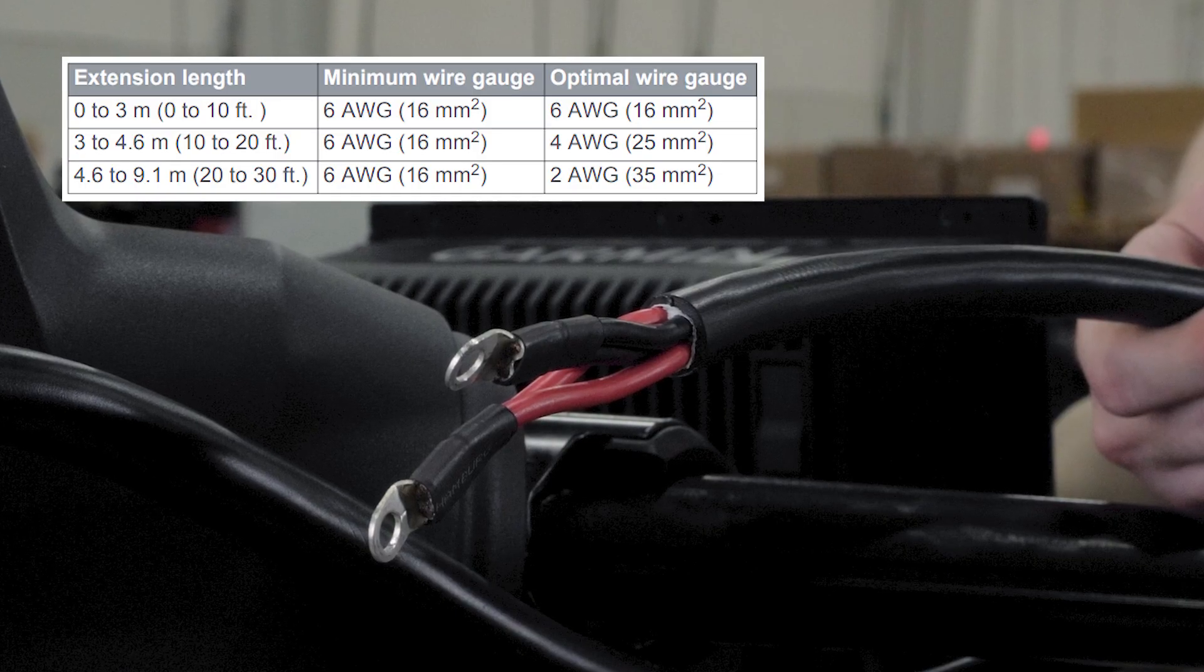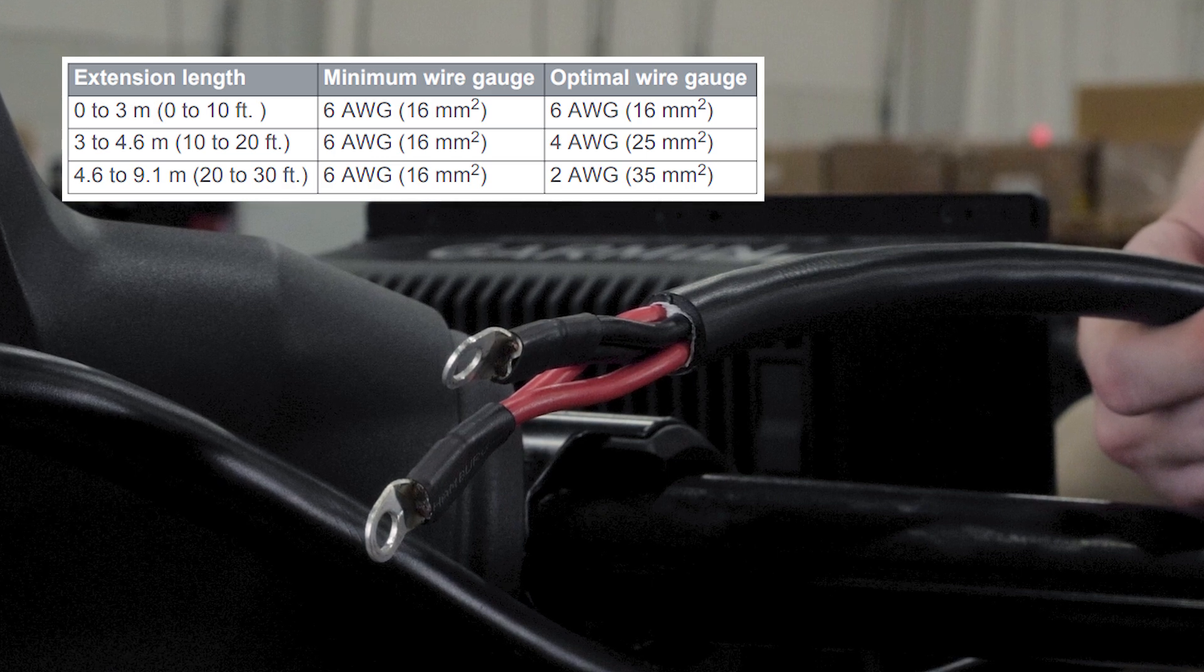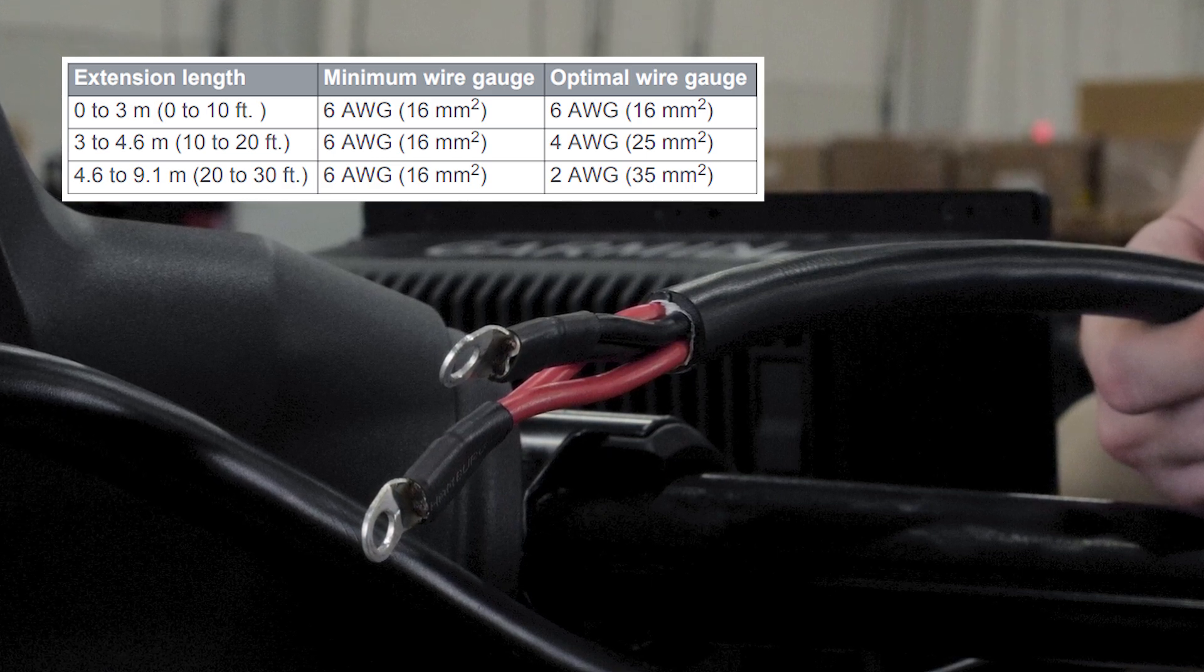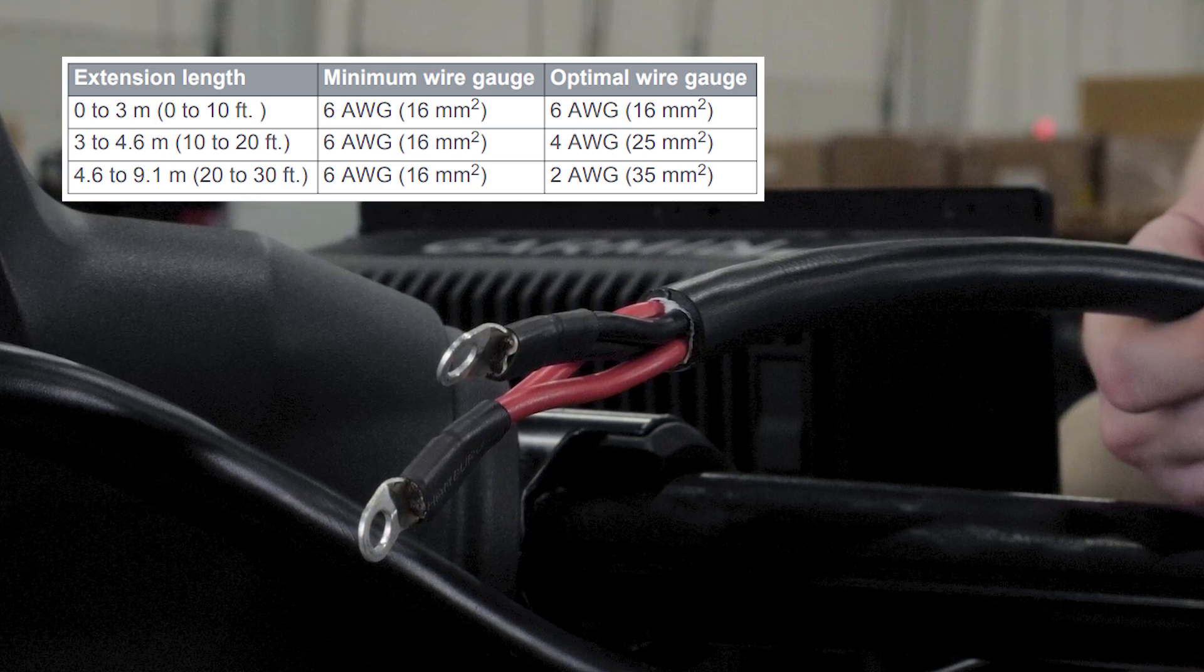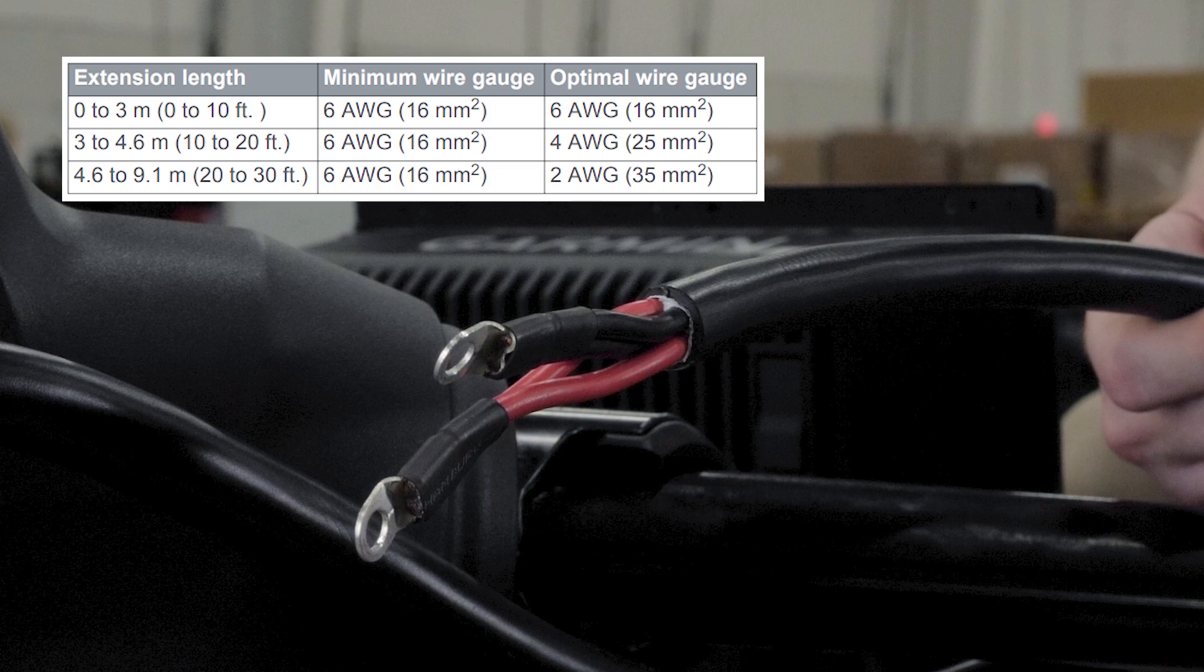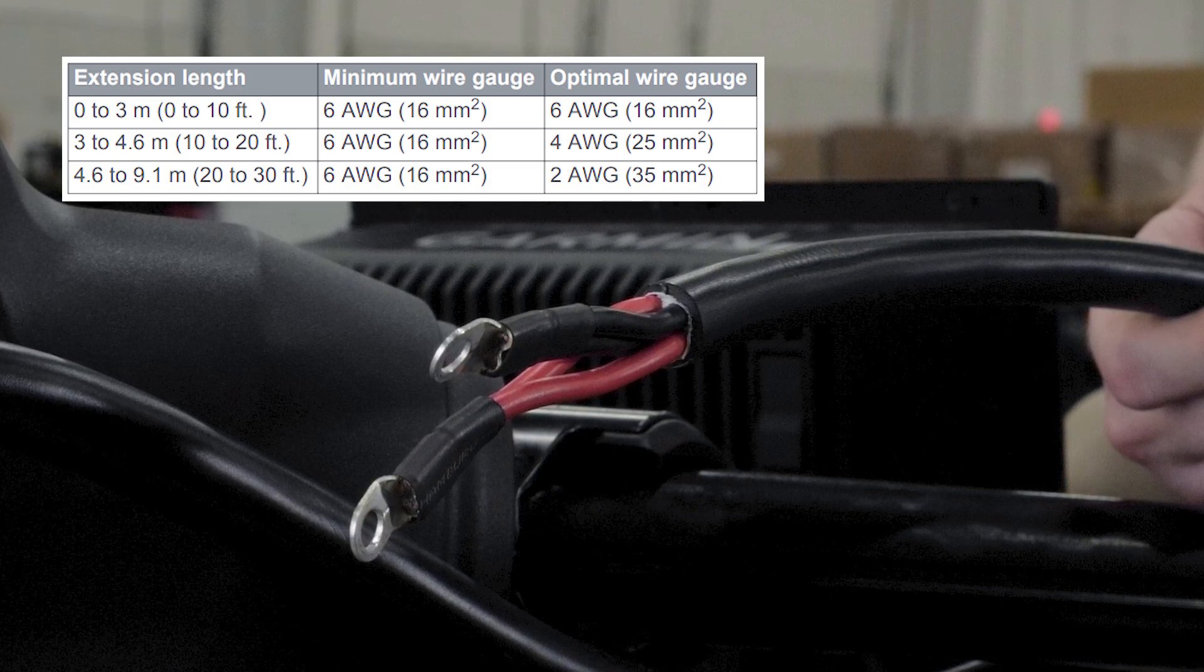Now let's connect the trolling motor to power. Route the power cable to the breaker panel or location where you plan to install the breaker. If you need to extend the power cable, use the appropriate gauge wire based on the length of the extension.